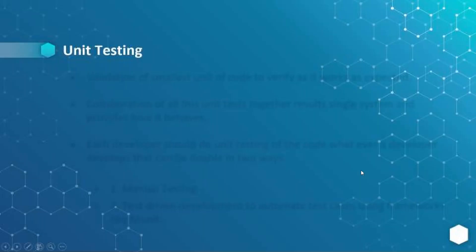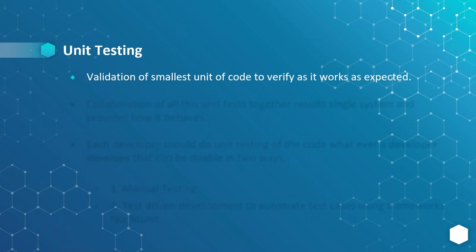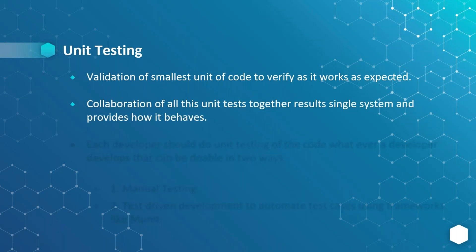First, let's understand what unit testing is. Testing is validating a smallest unit of code to verify if it works as expected. Even though we develop the business process as a big flow, it can still be divided into units of pieces that can be tested. That is called unit testing. The collaboration of all these unit tests together produces results that show how the entire system behaves.